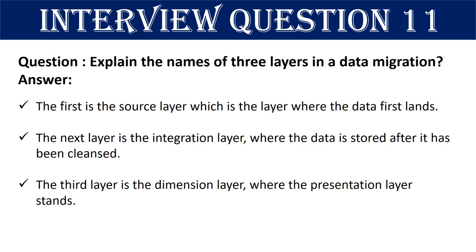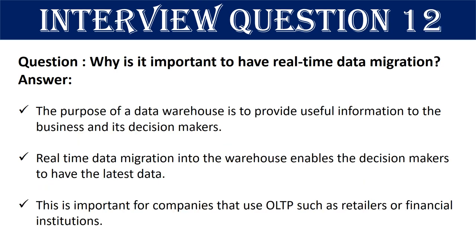Question 11: Can you tell me the names of the three layers in a data migration system? There are three layers: the first is the source layer, where the data first lands; the next is the integration layer, where the data is stored after it has been cleansed; the third and final layer is the dimension layer, where the presentation layer stands.